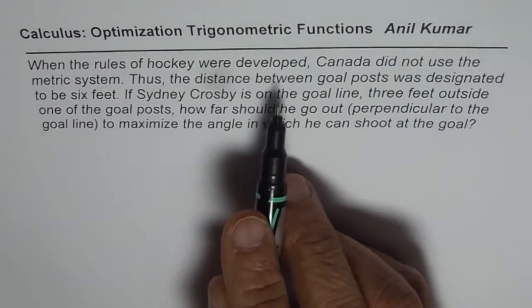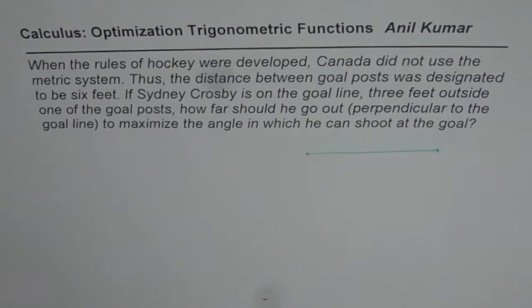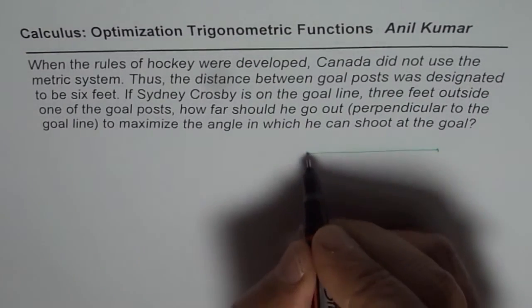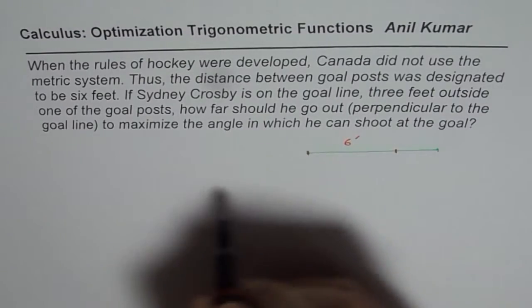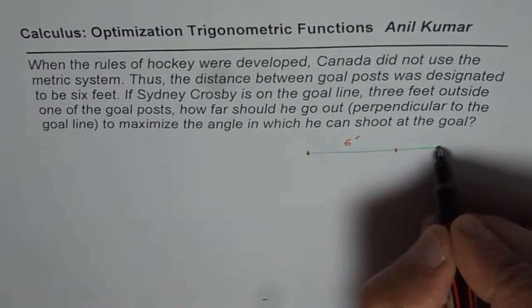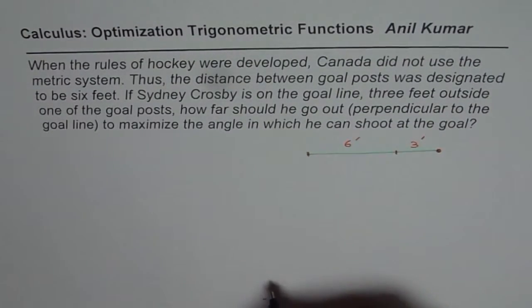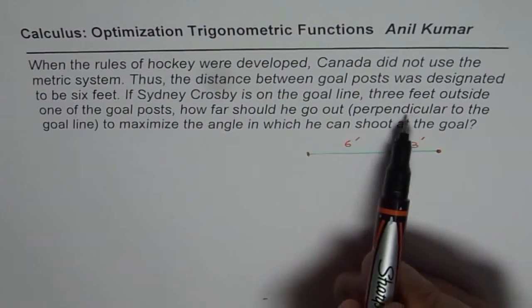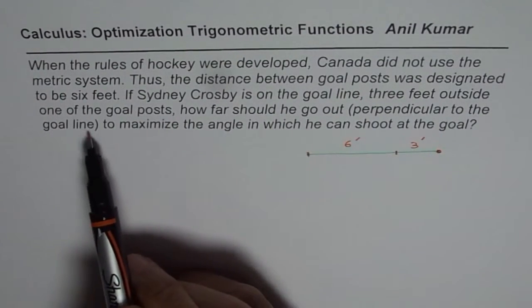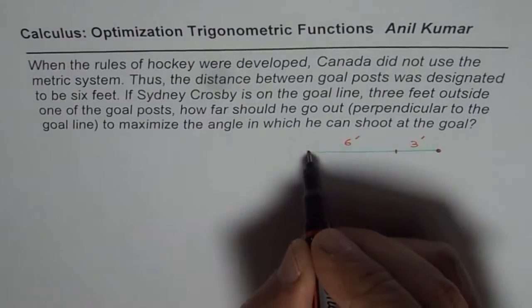So in this particular case, let us assume that is our goal line. This is the goal line in which we have a goal which is 6 feet. So from here, let us say that is 6 feet. And Sidney Crosby, our star player, is right there, 3 feet away. So this is 3 feet away. Now the question here is, how far should he go out perpendicular to the goal line to maximize the angle in which he can shoot at the goal? So that is the goal for us, right?